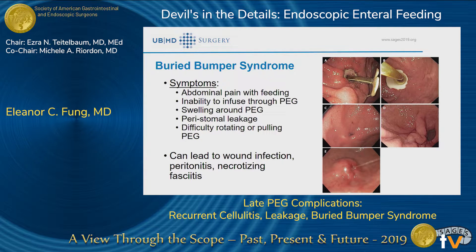In terms of symptoms to look for when suspecting buried bumper syndrome: patients having abdominal pain with feeding, not being able to flush or infuse anything through the tube, swelling around the PEG tube, increased leakage, and inability to rotate the tube with no free movement. Complications that can occur from this include wound infections, peritonitis, and necrotizing fasciitis — peritonitis being a little less common because the tract is formed.